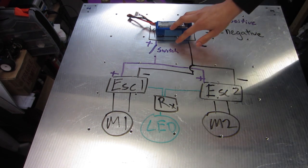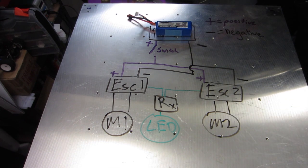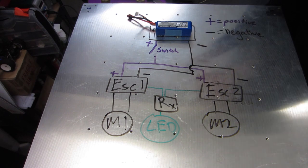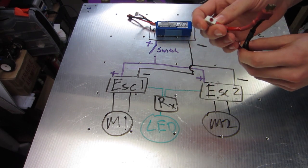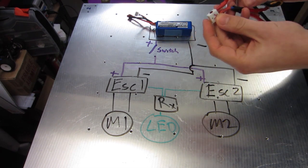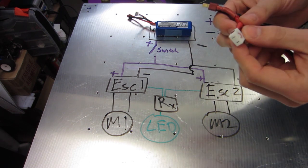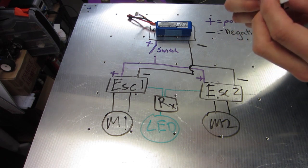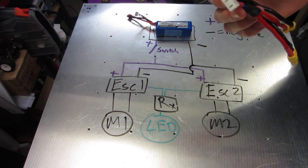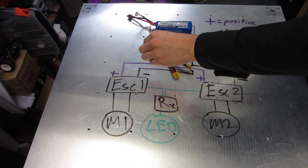For the switch, believe it or not, this is actually the switch we'll be using—a Fingertech switch. You can buy them through Fingertech Robotics or BotBits. For this two-wheeled platform, it's more than capable of carrying the current needed.